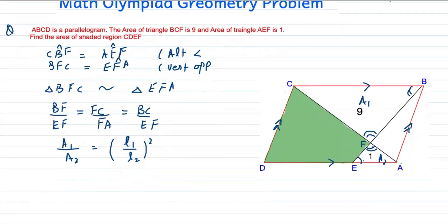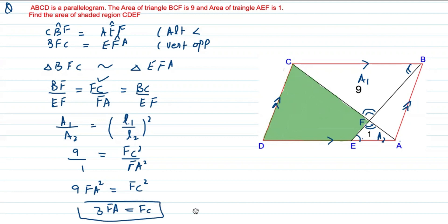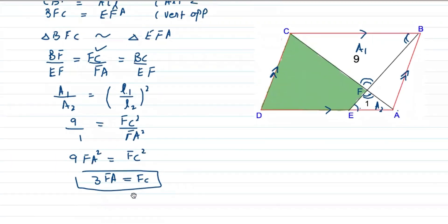Now we take the ratio FC over FA. We write it as FC²/FA², and the area A1 is 9 and A2 is 1. So FC² = 9·FA². Taking the square root on both sides, we get FC = 3·FA.